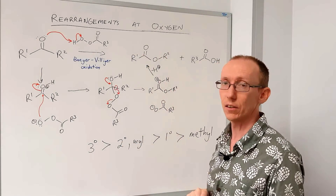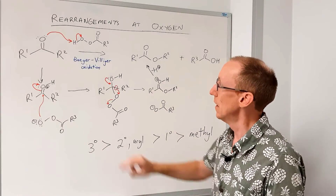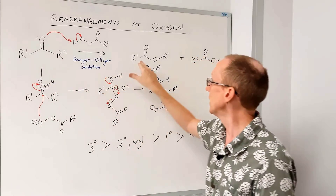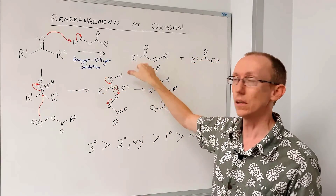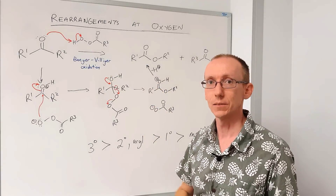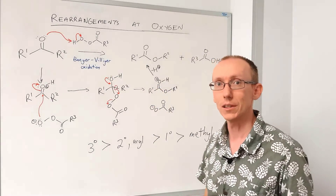That's the Baeyer-Villiger oxidation — a very useful way of turning ketones into esters using these peracids. Thanks for watching.